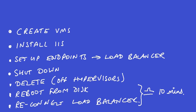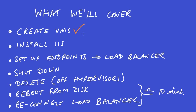We're going to create the simplest pop-up lab consisting of two load-balanced web servers, and we're going to go through seven steps: 1. Create the VMs. 2. Install IIS. 3. Set up the endpoints to the load balancer. 4. Show a lab shutdown. 5. Delete the VMs off the Azure hypervisor to avoid charges. 6. Show how to reboot from the saved disks. 7. Reconnect the endpoints to the load balancer, and with the last two steps, we'll have recreated the pop-up lab.